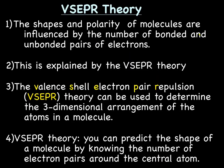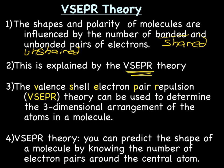We'll start with the VSEPR theory. The shapes and polarity of molecules are influenced by the number of bonded, or shared, and unbonded, or unshared, pairs of electrons. And this is explained by what we call the VSEPR theory.